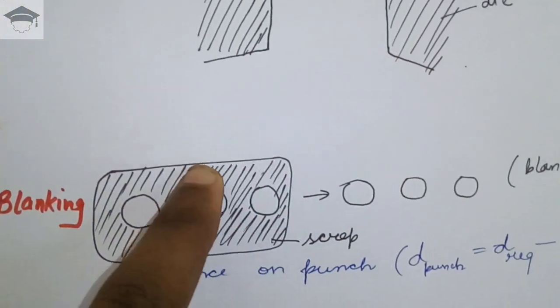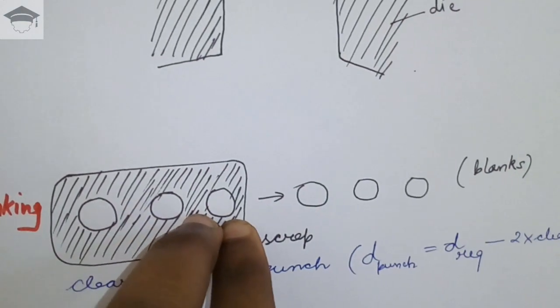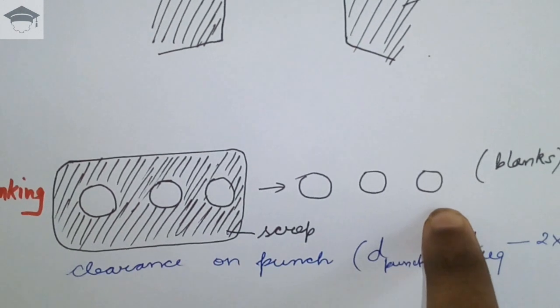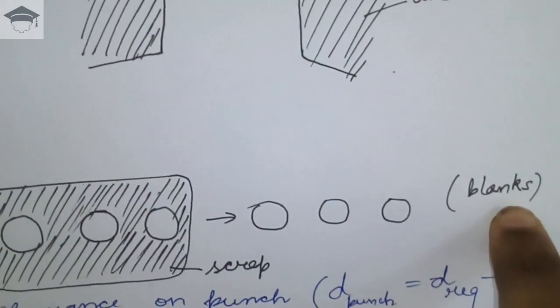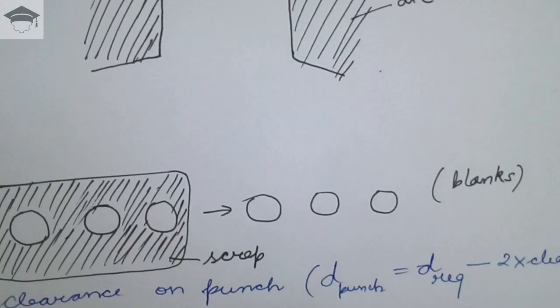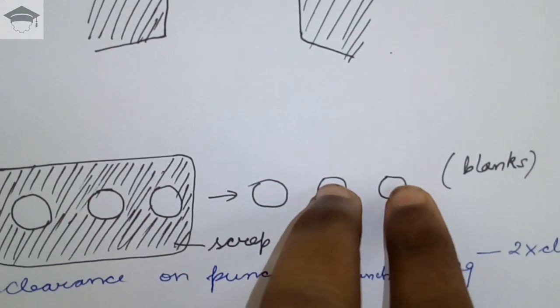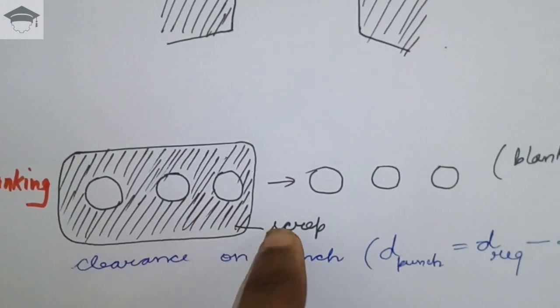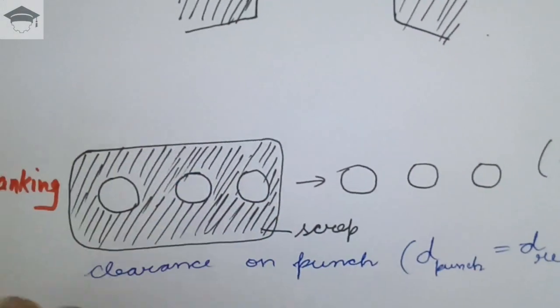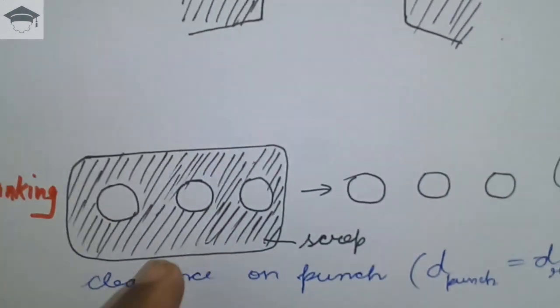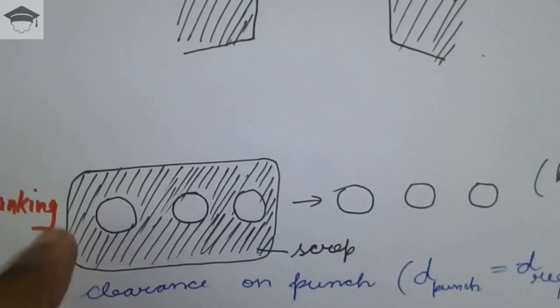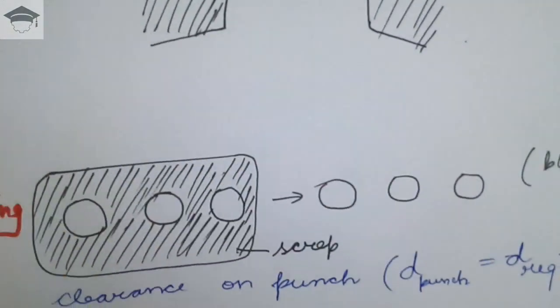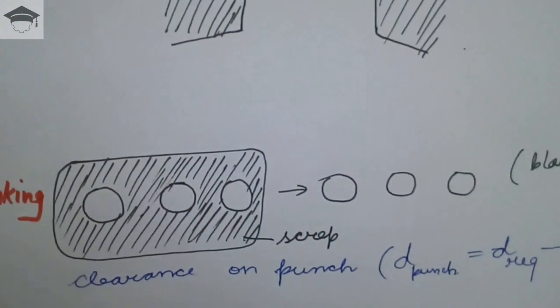Suppose this was the original sheet and these three holes have been cut out. These three holes that are obtained are known as blanks. These three are the useful workpiece, and the remaining sheet is known as scrap and this is wastage. The three required sheets obtained after blanking operations are useful, and the remaining sheet from which the blanks are obtained is scrap.